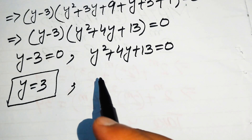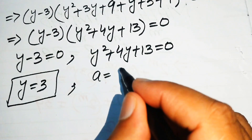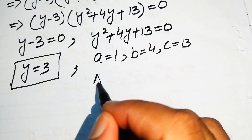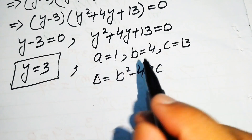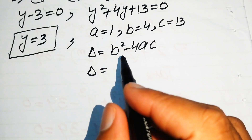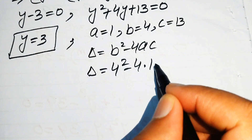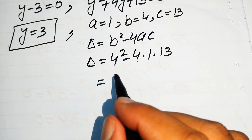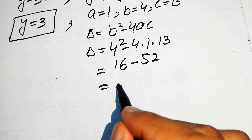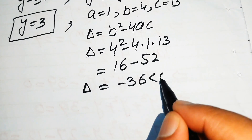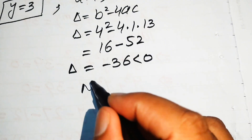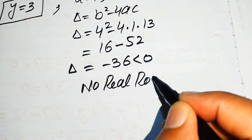We check using the discriminant formula. The coefficients are a equals 1, b equals 4, and c equals 13. The discriminant is delta equals b squared minus 4ac. Substituting: 4 squared minus 4 times 1 times 13, which gives 16 minus 52 equals minus 36. Since minus 36 is less than 0, the discriminant is negative, which means this quadratic equation has no real roots. So we reject this case.